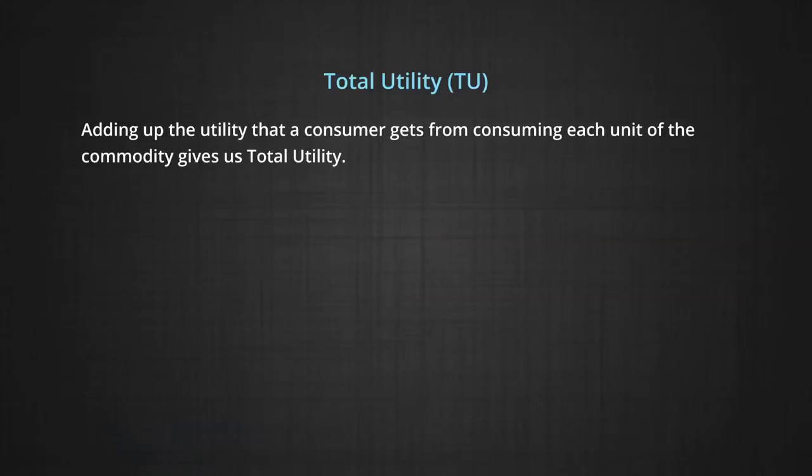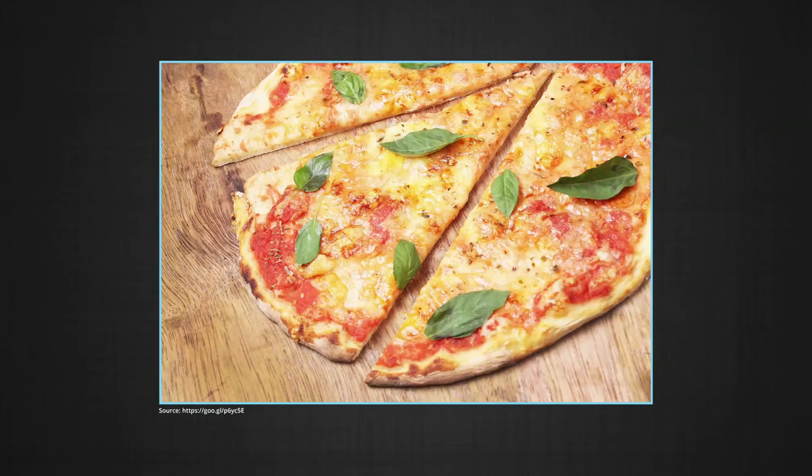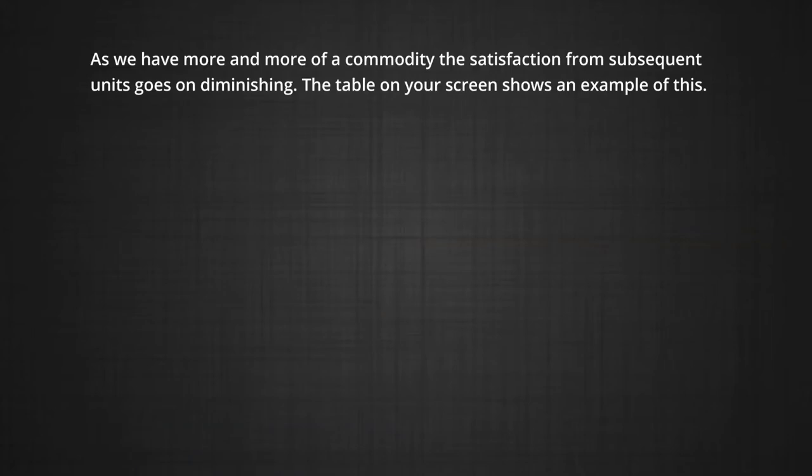We believe that the consumer's utility generally increases from consuming more and more of a commodity. Adding up the utility that a consumer gets from consuming each unit of the commodity that she buys gives us total utility. Imagine that you want to have pizza. The intensity of wanting pizza is so high that the first bite into it makes you say wow. Typically, as you go on having more and more pizza, you begin to feel full. So each extra bite gives you less satisfaction than the one before. Eventually, you may even begin to feel a little sick of pizza.